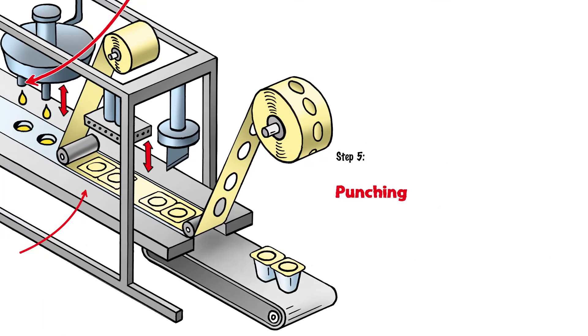Step 5: Punching and Ejection. During the final step, the sealed cups are punched out and separated from the base track, and in doing so, individual or multiple packages can be created. The leftover track is rolled up for disposal.